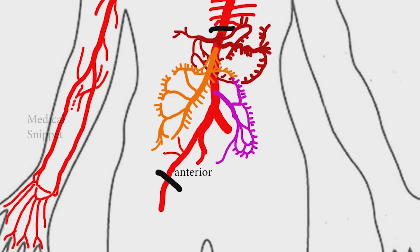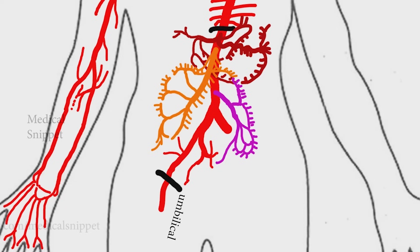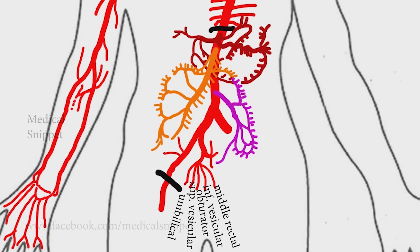The internal iliac artery divides into anterior and posterior divisions. The posterior division gives rise to the iliolumbar artery, lateral sacral artery, and superior gluteal artery. The anterior division gives rise to the umbilical artery, from which the superior vesicular artery arises. Other branches of the anterior division are the obturator artery, inferior vesicular artery in males or vaginal artery in females, middle rectal artery, internal pudendal artery, and inferior gluteal artery. In females there is an additional branch called the uterine artery.